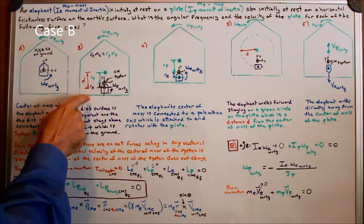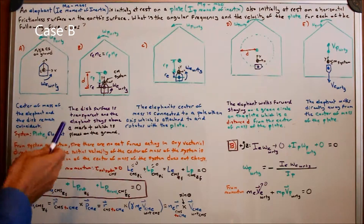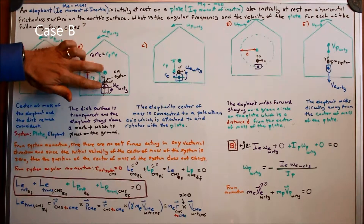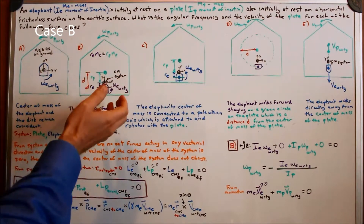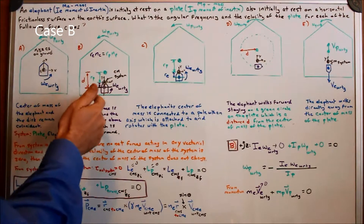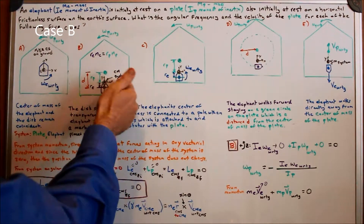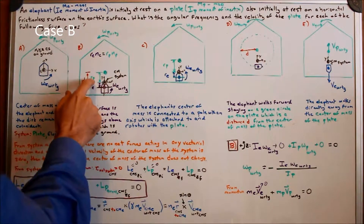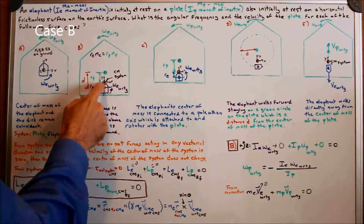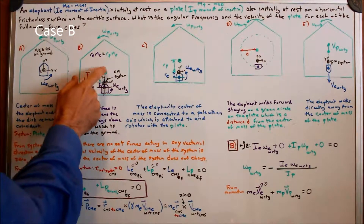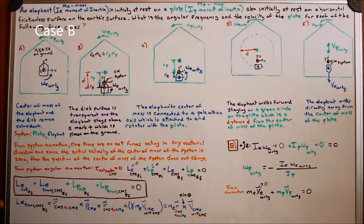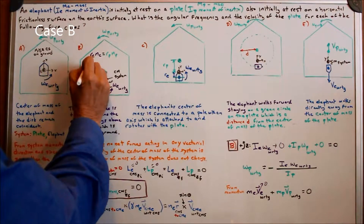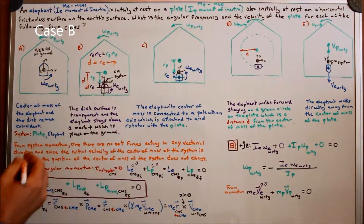The center of mass of the system has to be between the two centers of mass. If the elephant is very heavy, it's closer to the elephant; if very light, it's closer to the disc. One can do torques around the x-axis to find that R sub E equals m sub p times D divided by (m sub e plus m sub p), and R sub P equals m sub e times D divided by (m sub e plus m sub p), and D equals R sub E plus R sub P.